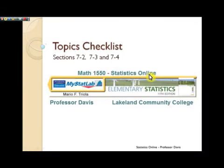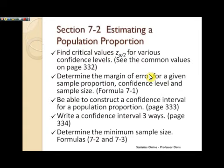Hi, it's Professor Davis. Here's your Topics Checklist for Sections 7.2, 7.3, and 7.4. In this chapter, we want to introduce ourselves to inferential statistics. That's where we want to take some sample statistics and be able to use that to estimate what population parameters would be.